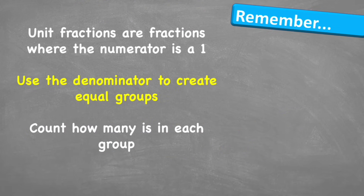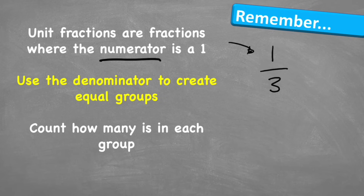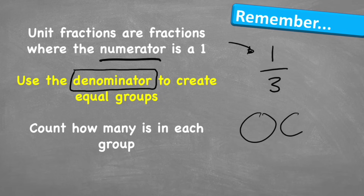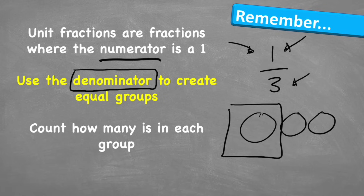Let's look at what to remember. Unit fractions are fractions where the numerator — the number on the top — is a 1. When we're trying to find a fraction of an amount, we use the denominator, the number on the bottom, to create equal groups. So for this example, I would need 3 circles because I have a denominator of 3. Then I count how many is in each group and look at the numerator to tell me how many groups I want to count the total for — and that gives me my answer.